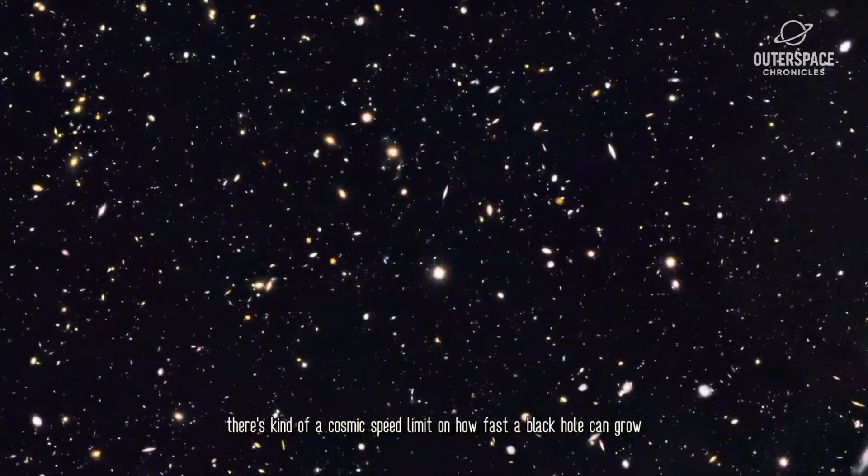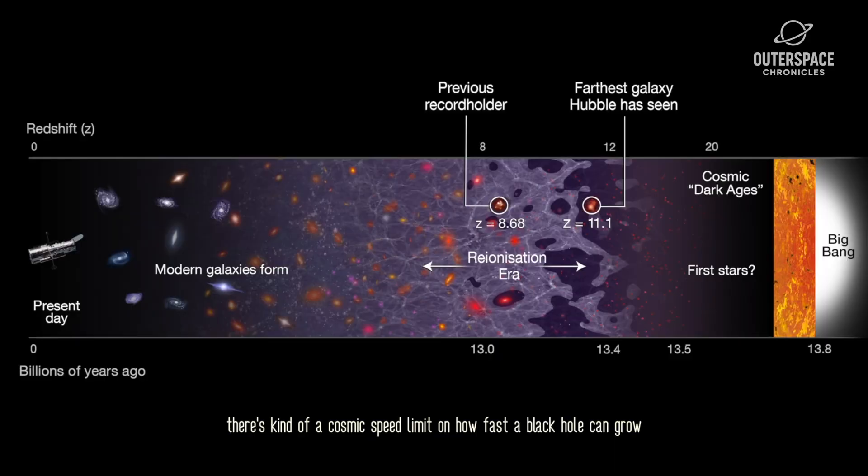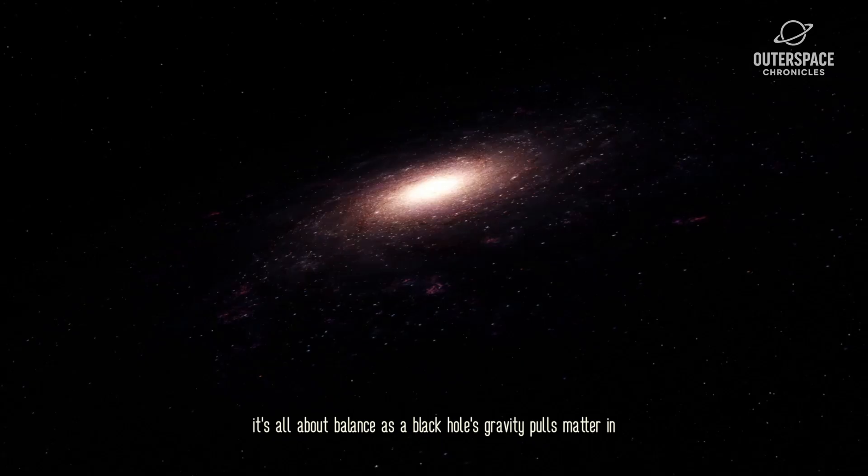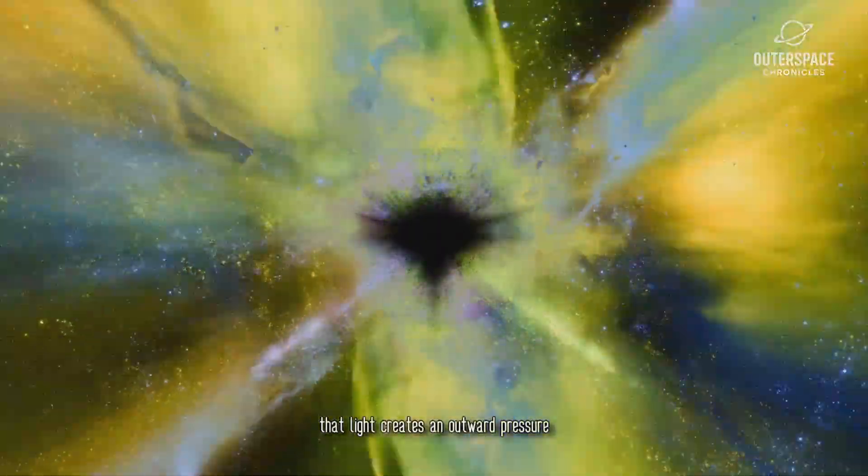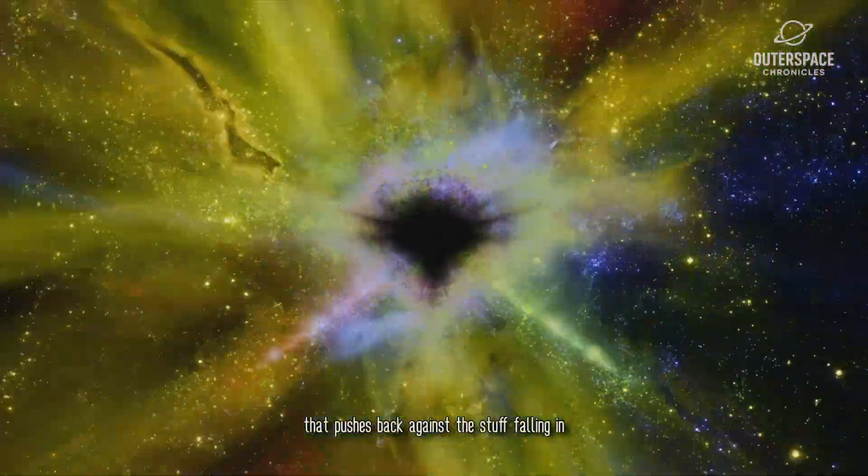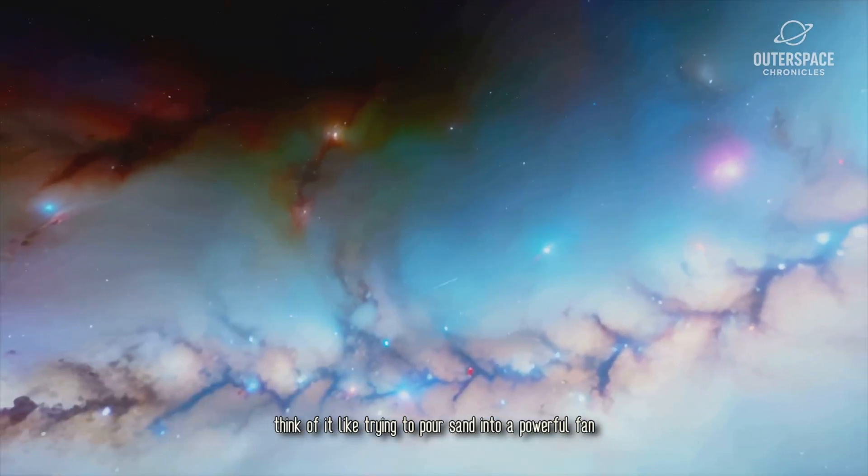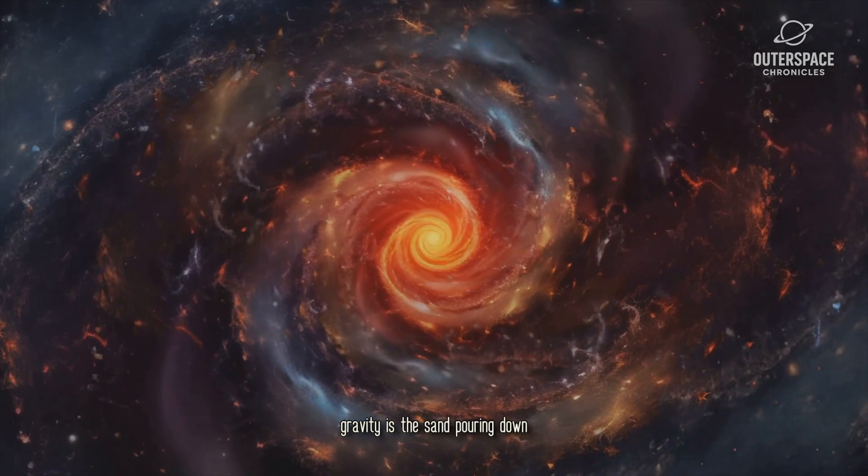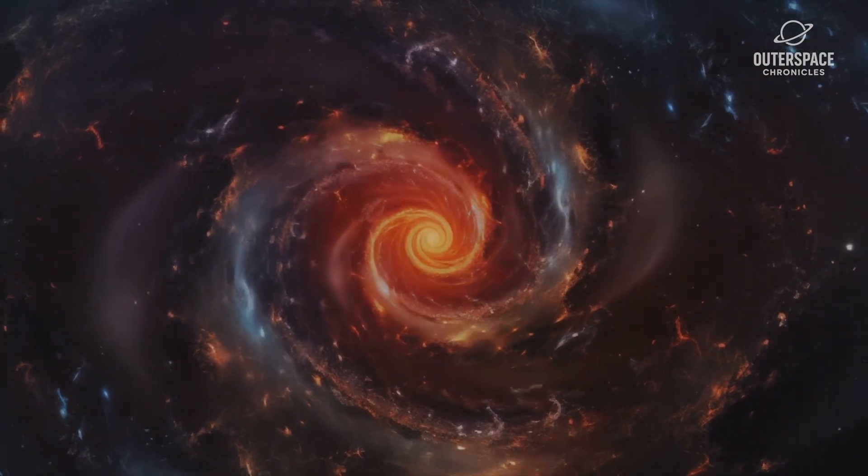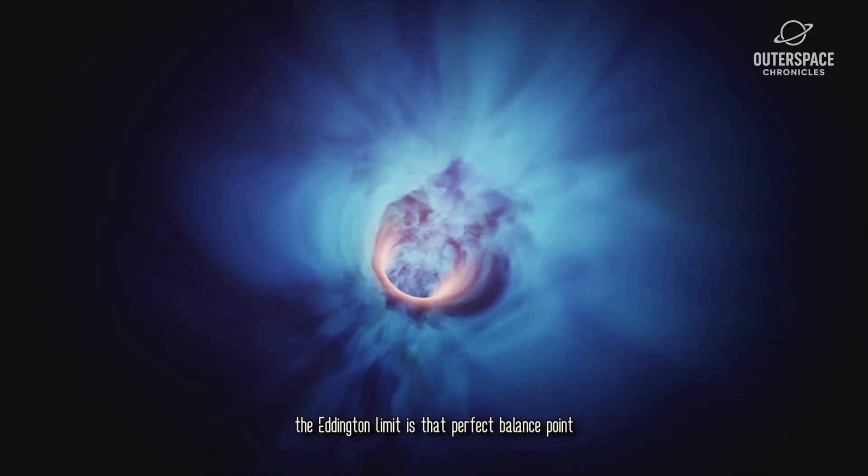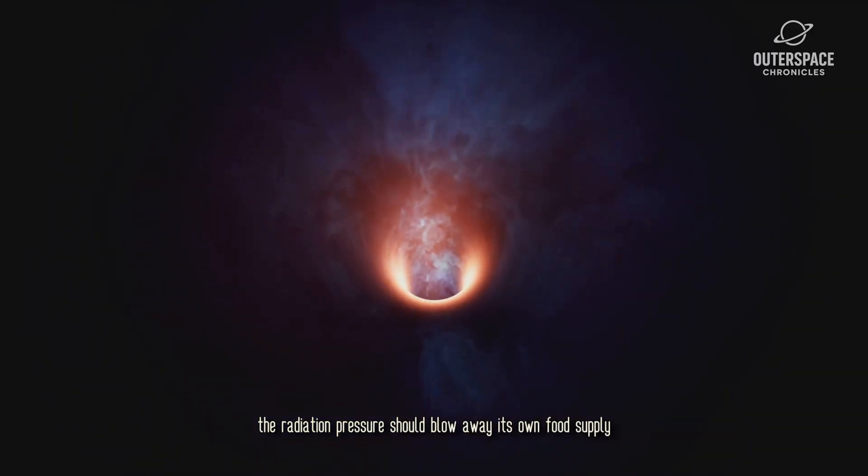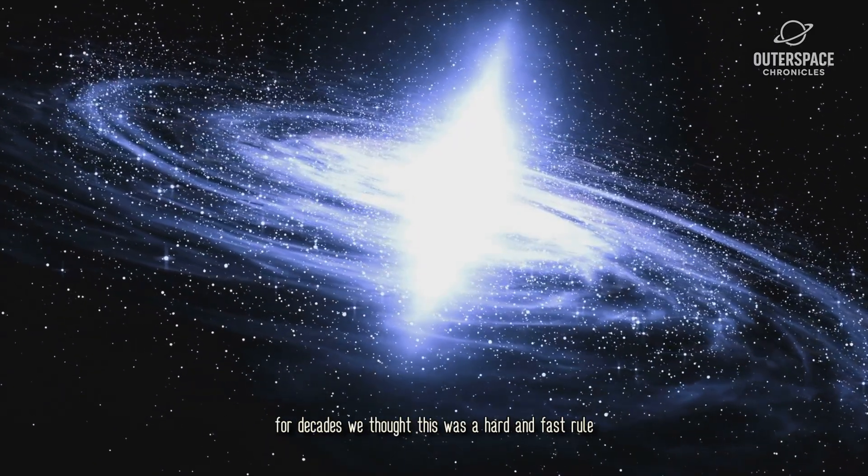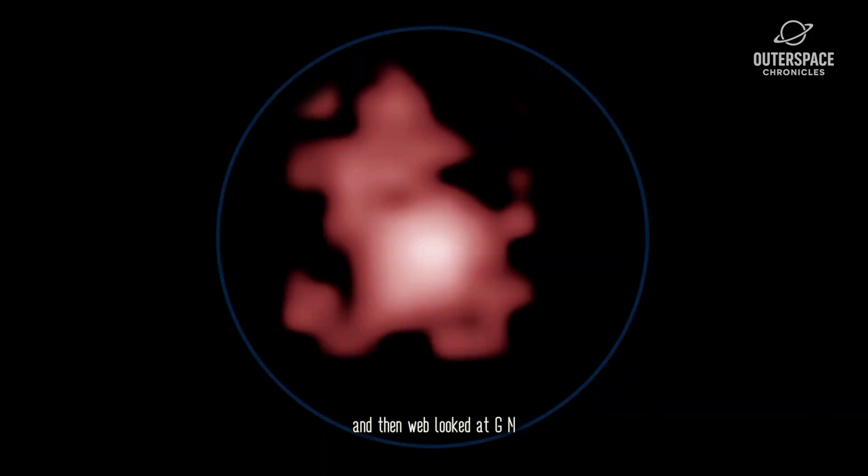In astrophysics, there's kind of a cosmic speed limit on how fast a black hole can grow. It's called the Eddington limit. The idea is pretty simple. It's all about balance. As a black hole's gravity pulls matter in, that matter gets super hot and forms a glowing disk that shines with incredible intensity. That light creates an outward pressure that pushes back against the stuff falling in. Think of it like trying to pour sand into a powerful fan. Gravity is the sand pouring down, but the fan is the radiation pushing back up. The Eddington limit is that perfect balance point where the black hole is feeding at its maximum steady rate. If it tries to eat any faster, the radiation pressure should blow away its own food supply. For decades, we thought this was a hard and fast rule.